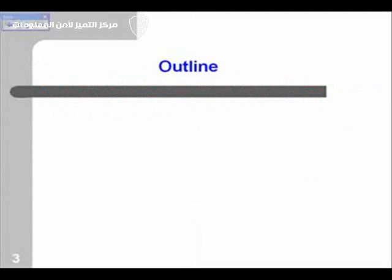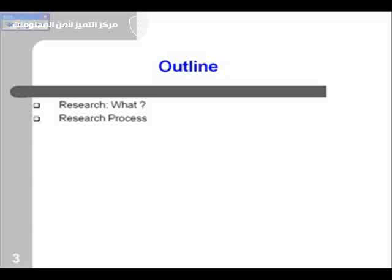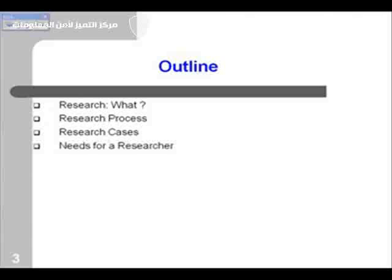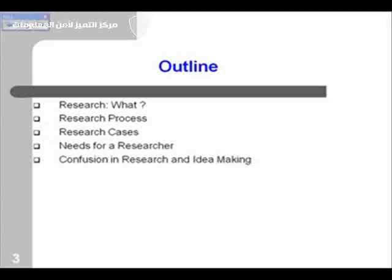Now I will give you the outline of my presentation. First we will discuss research — what is research, some basic definitions, and why we are doing research. Then we will look at the research process: what is the research process and what we do in research. We will also explore four research cases. Then we will see the needs of a researcher — what a researcher should have in himself or herself. And then confusion in research and idea making.